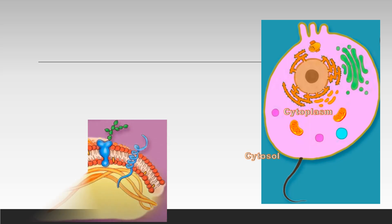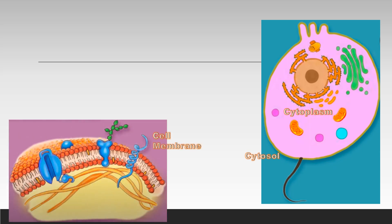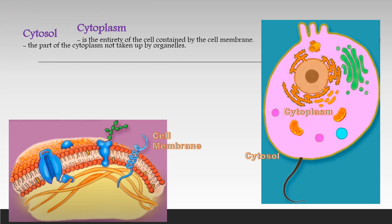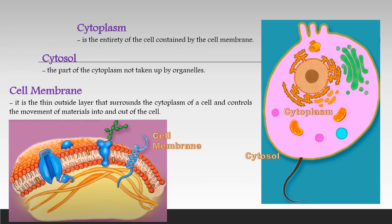The next slide is about the cytoplasm, cytosol, and cell membrane. The cytoplasm is not to be confused with the cytosol. The cytoplasm is the entirety of the cell contained by the cell membrane. The cytosol, on the other hand, is the part of the cytoplasm not taken up by organelles. The cell membrane is the thin outside layer that surrounds the cytoplasm of a cell and controls the movement of materials into and out of the cell.